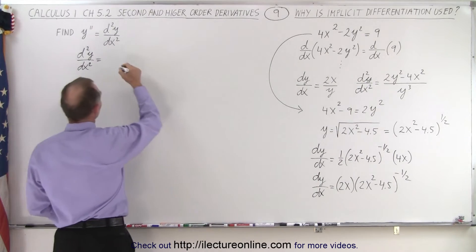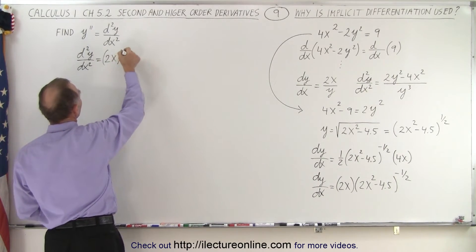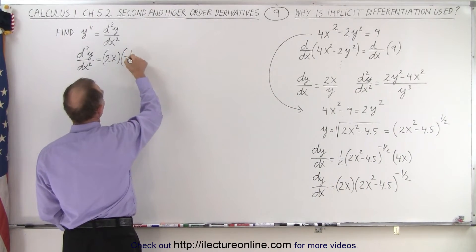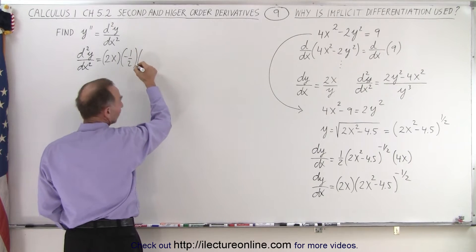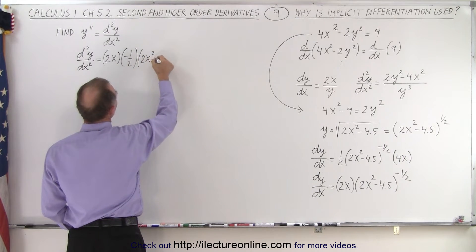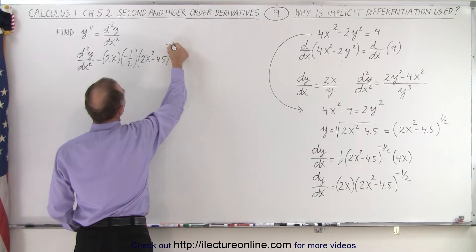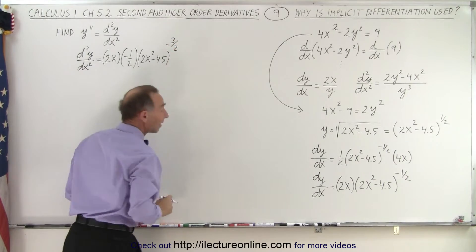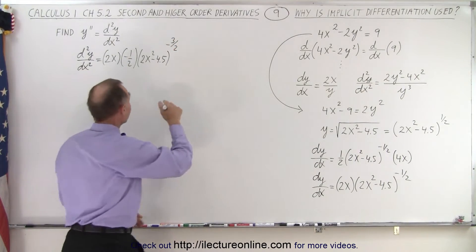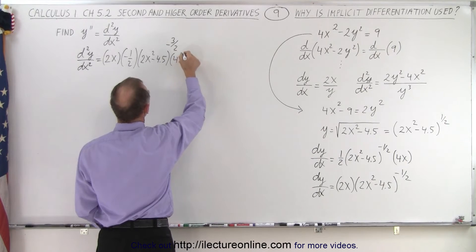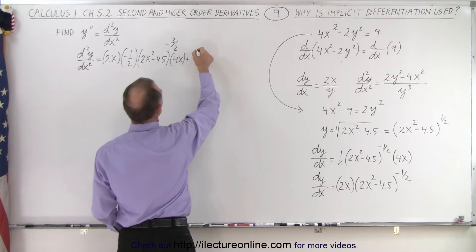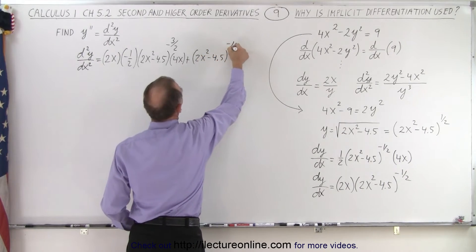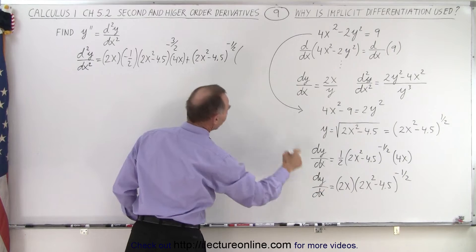So the second derivative equals: the first, which is 2x, times the derivative of the second. We bring the exponent to the front, so we have times minus one-half, times 2x squared minus 4.5 to the minus three-halves — that should be three-halves — times the derivative of what's inside, so that would be times 4x. Plus the second, which is 2x squared minus 4.5 to the minus one-half power, times the derivative of the first, which is 2.